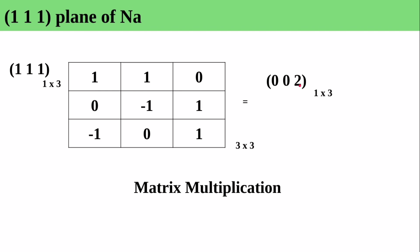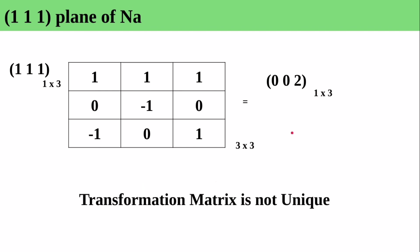If we want to elongate two units along the z-axis, the transformation matrix changes accordingly. This is how we have to proceed in that case.